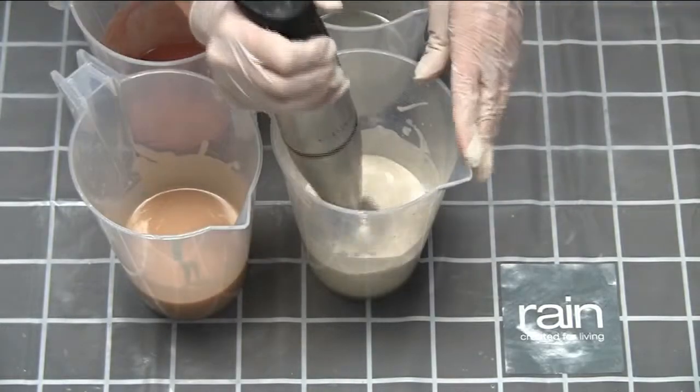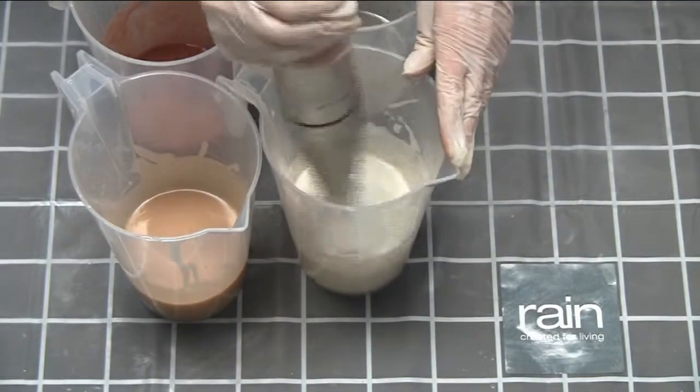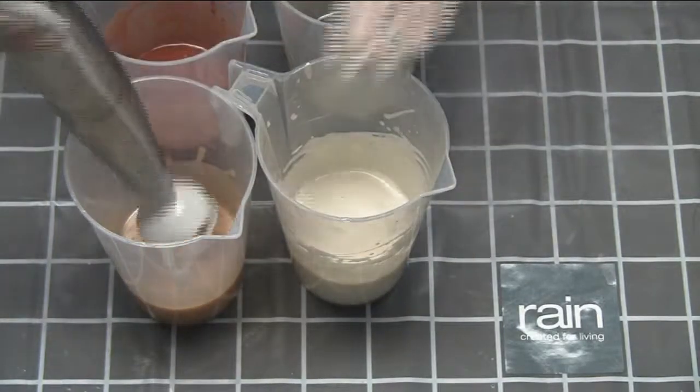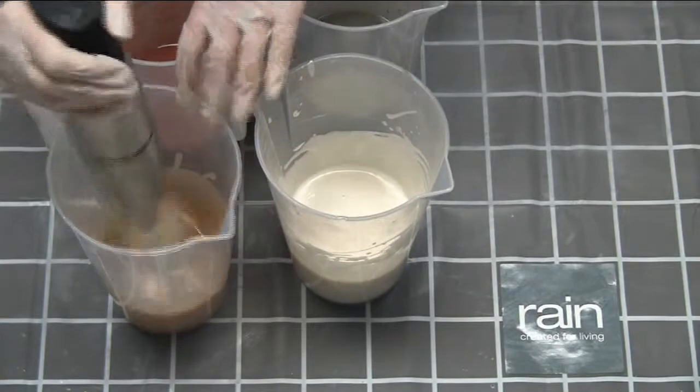You can give them a quick blitz with the stick blender, working from your lightest color up to your darkest color, just to make sure that your colors are properly integrated into your batter.